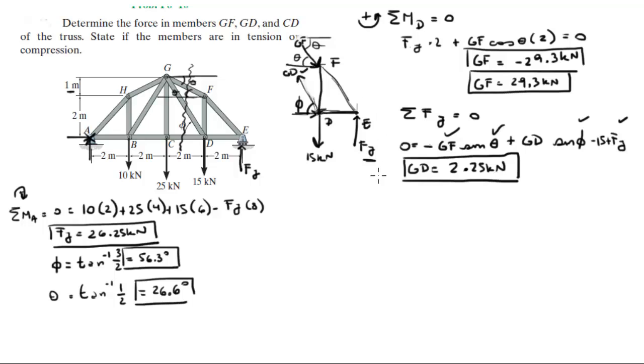So GD was going up, that one's correct. Now you know that the sum of the forces in the x is equal to 0, so CD minus GD cosine of phi plus GF cosine of theta is equal to 0. We got GD, we got GF, we got theta, so we solve for CD and we get that it is equal to negative 25 kilonewtons.